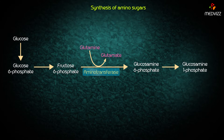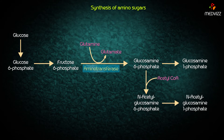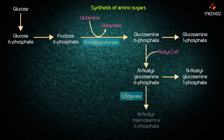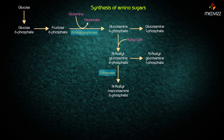Glucosamine-6-phosphate can be converted to glucosamine-1-phosphate, or it may be acetylated by acetyl-CoA to form N-acetylglucosamine-6-phosphate. N-acetylglucosamine-6-phosphate is then converted to N-acetylglucosamine-1-phosphate, or it may be epimerized to N-acetylmannosamine-6-phosphate by the enzyme epimerase.